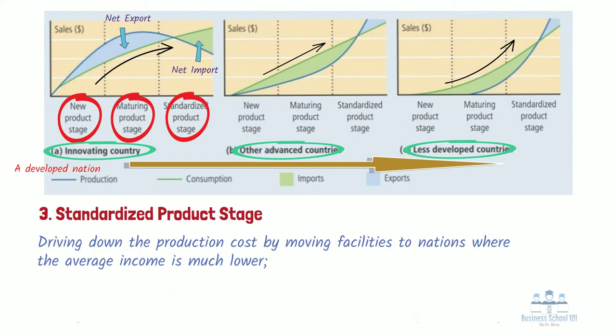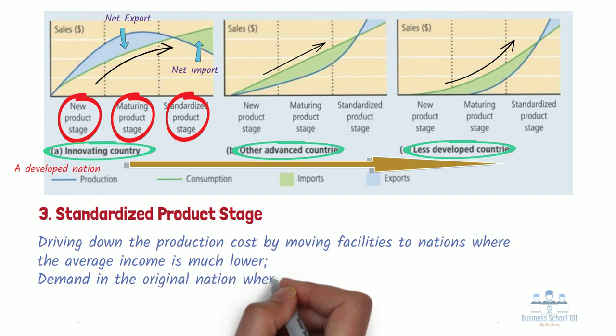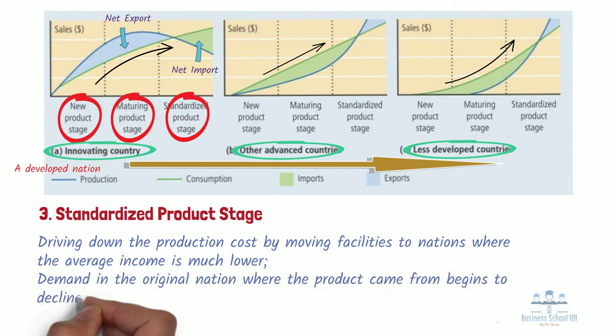The local workforce in lower income nations are then exposed to the technology and methods to make the product, and competitors begin to rise as they did in developed nations previously. Meanwhile, demand in the original nation where the product came from begins to decline and eventually dwindles as a new product grabs the attention of the people. The market for the new product is now completely saturated and the innovating corporation leaves the manufacturing of the product in low income countries and switches its focus to a new product as it bows gracefully out of the market.